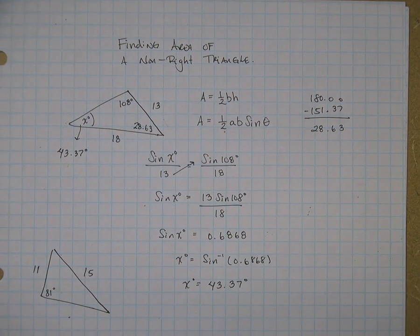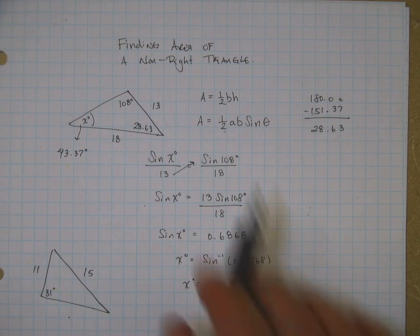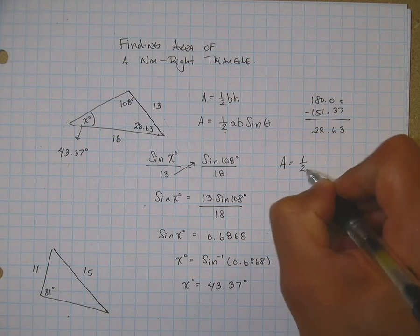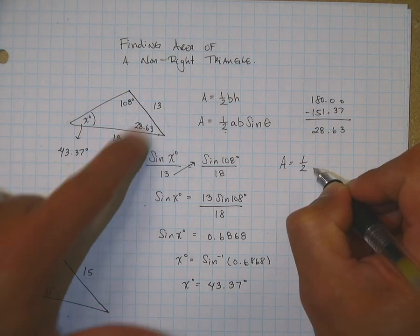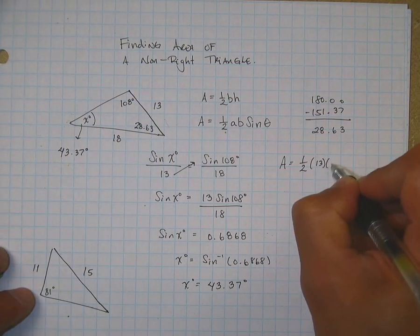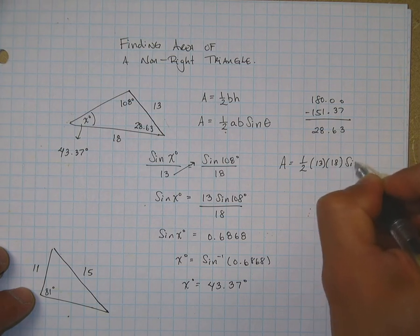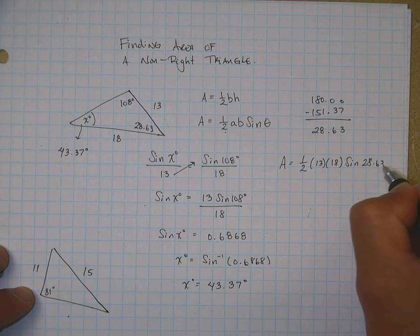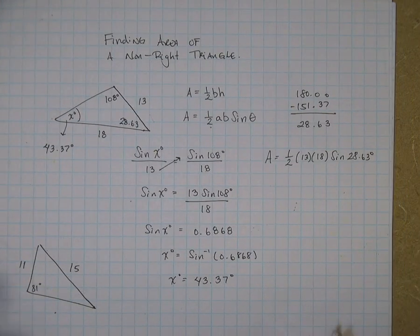Now, I can go ahead and use my equation here to find the area. So, the area is going to equal one half. Take any of these two sides, 13 times 18, times the sine of that angle that's between. So, that's sine of 28.63 degrees.